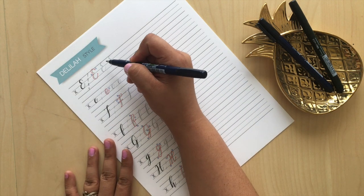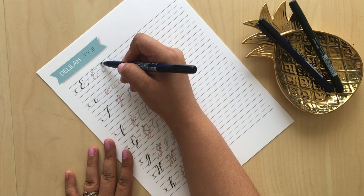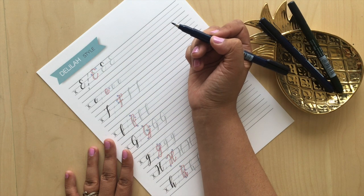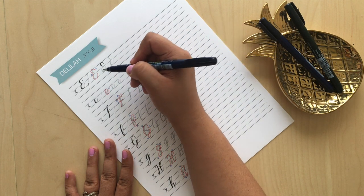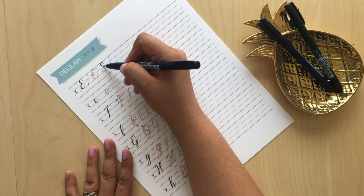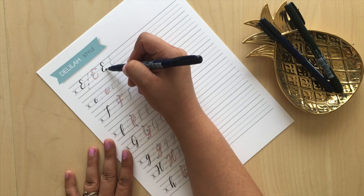Then you just start with your E. Thin strokes to thick, and then release the pressure when you get to the middle to create a thin stroke again. Then gradually increase and then release.